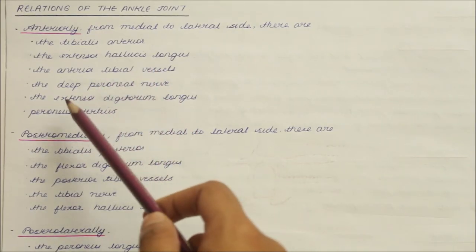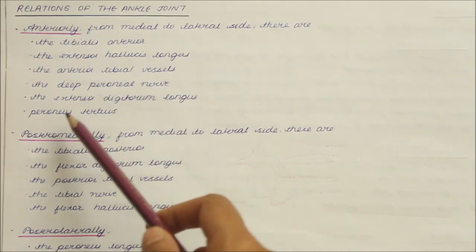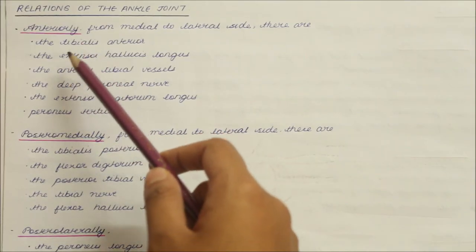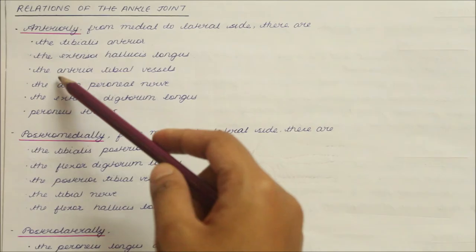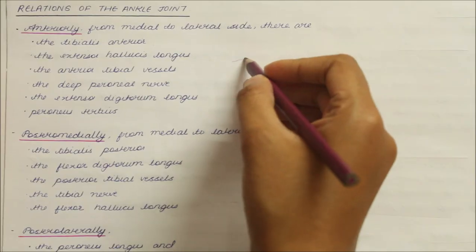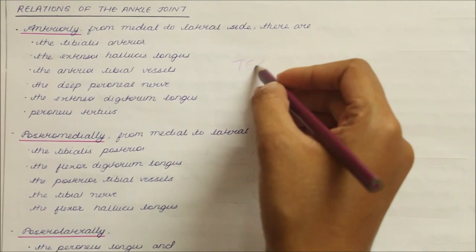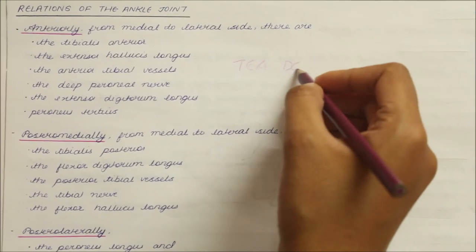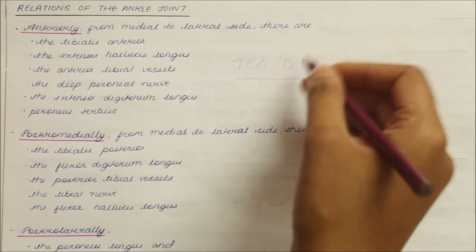To remember the anterior relations from medial to lateral, we can use the mnemonic T-E-A-D-E-P: Tibialis anterior, Extensor hallucis longus, Anterior tibial vessels, Deep peroneal nerve, Extensor digitorum longus, and Peroneus tertius.